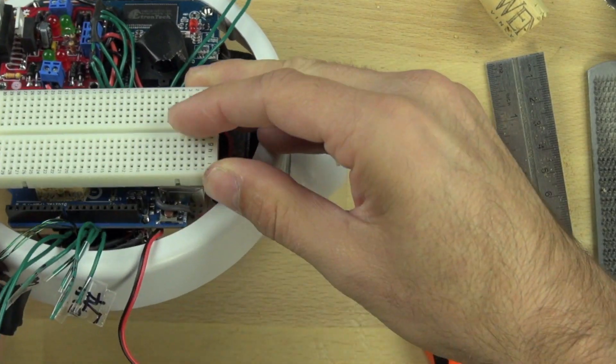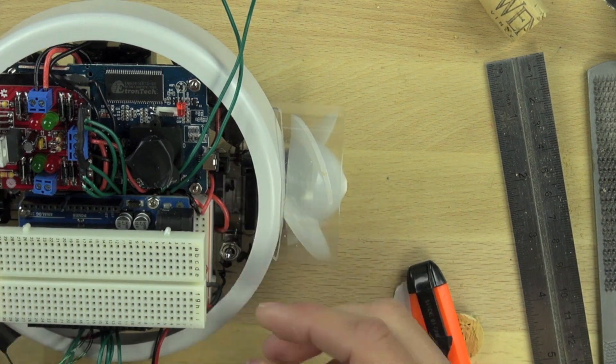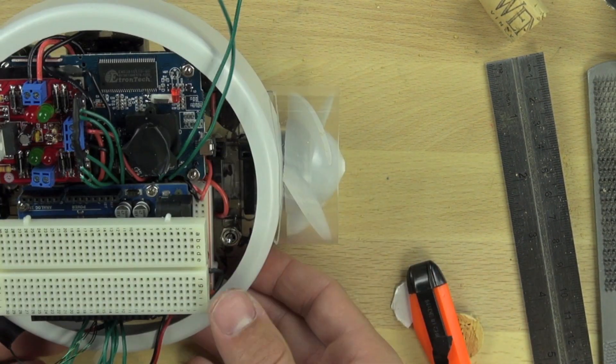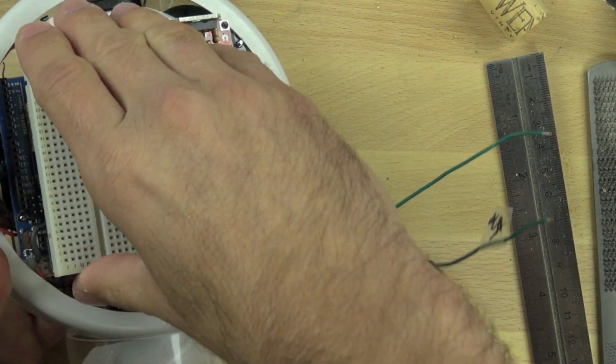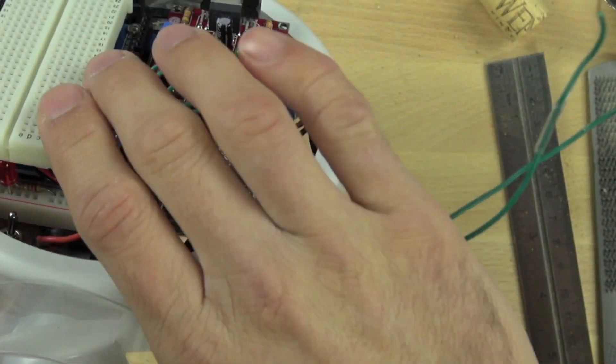Once we have that lined up, we'll take our breadboard and press it into place. This will allow us to change out different components like resistors, capacitors, and transistors and do different configurations and experiments with the BitsyBot.